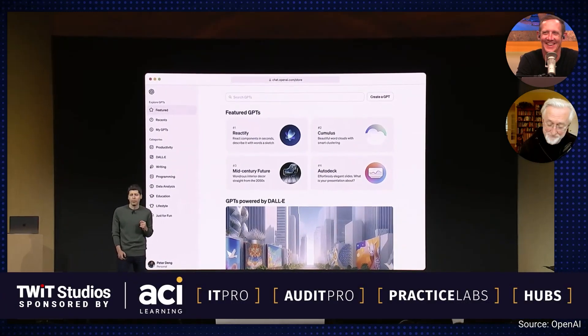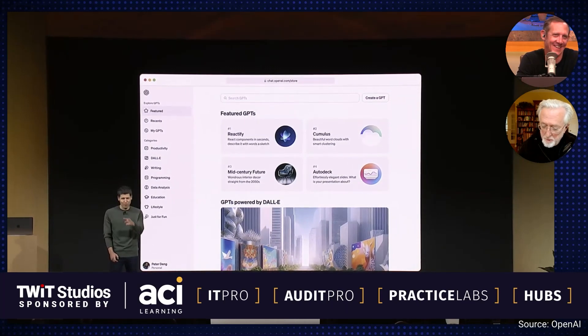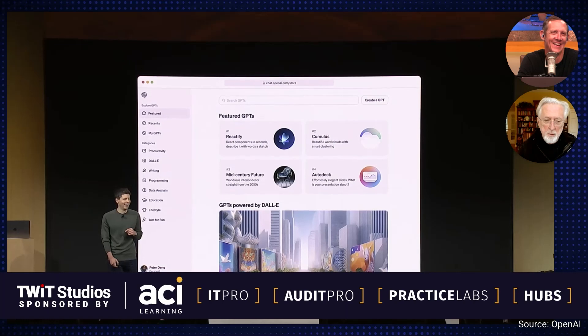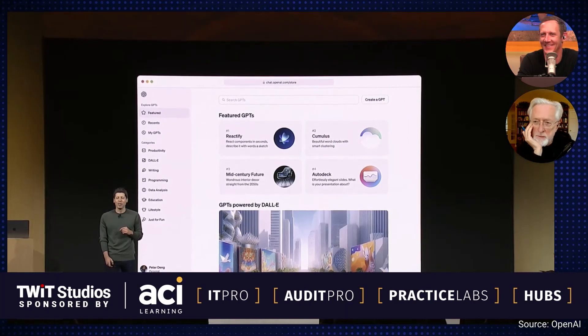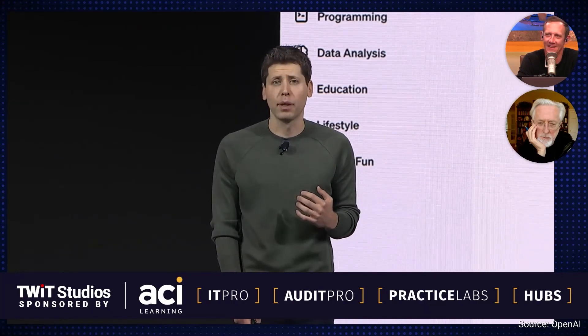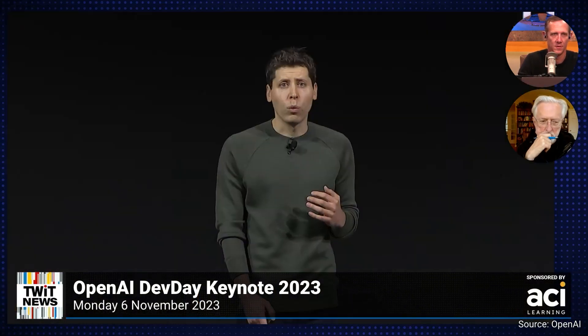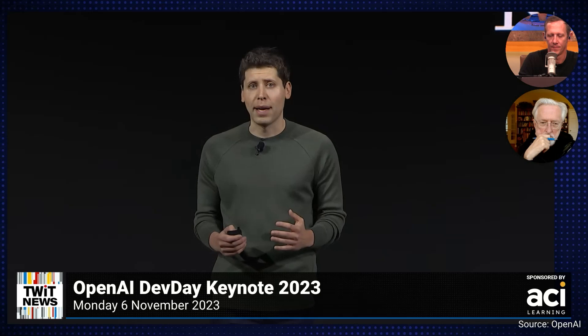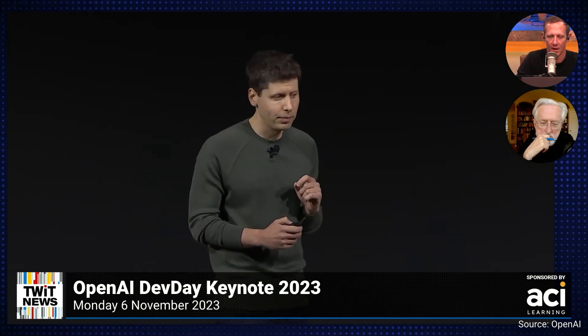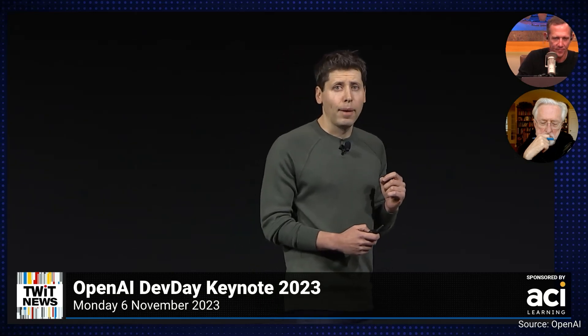We're going to launch the GPT store. You can list a GPT there and we'll be able to feature the best and most popular GPTs. Of course, we'll make sure that GPTs in the store follow our policies before they're accessible. We're going to pay people who build the most useful and most used GPTs a portion of our revenue. We're excited to foster a vibrant ecosystem with the GPT store, and we can't wait to see what you'll build.